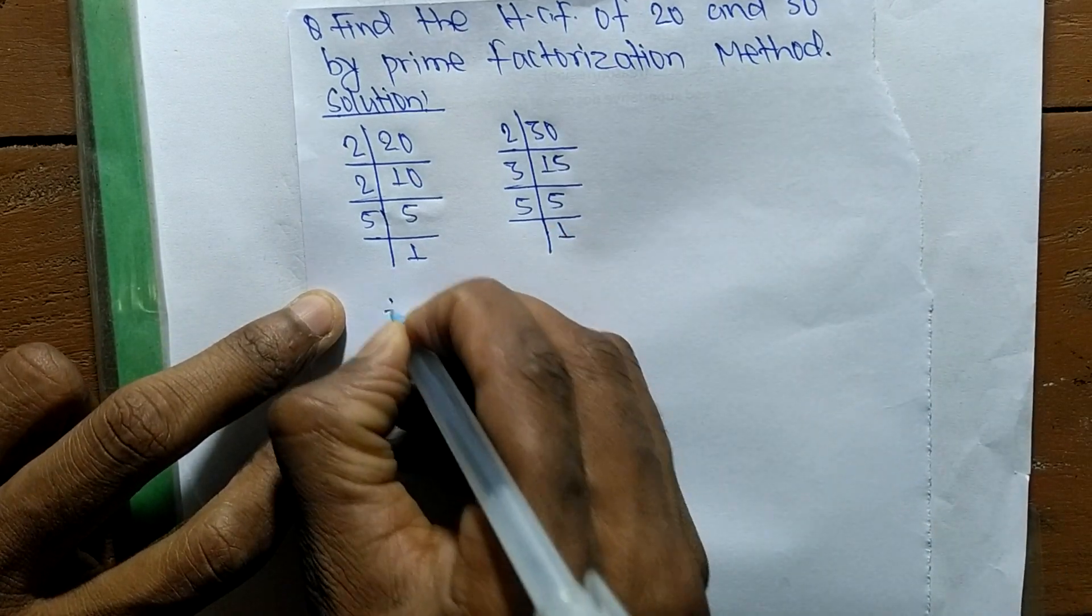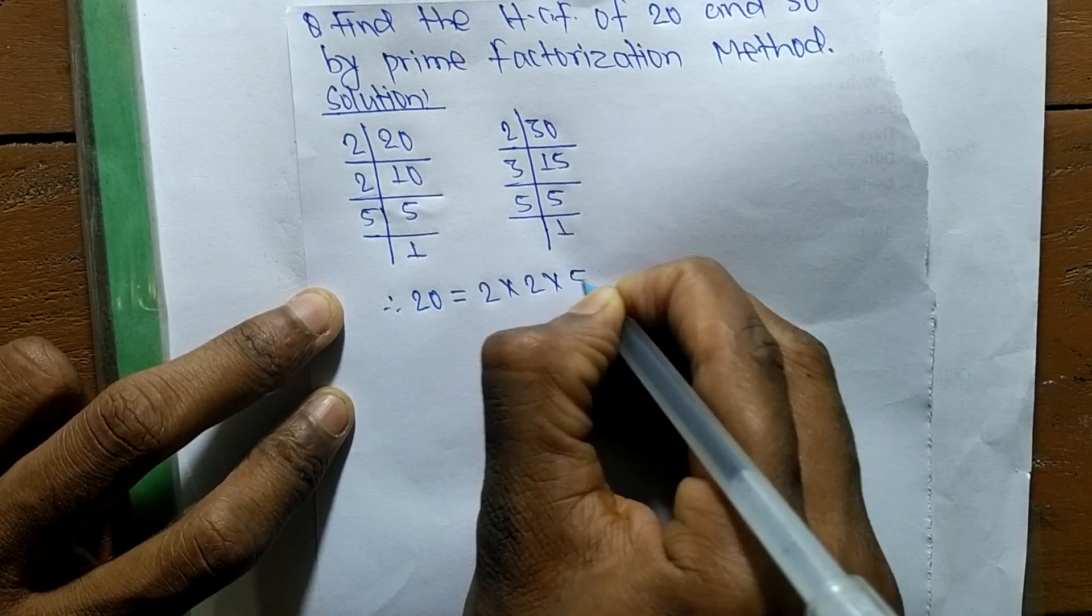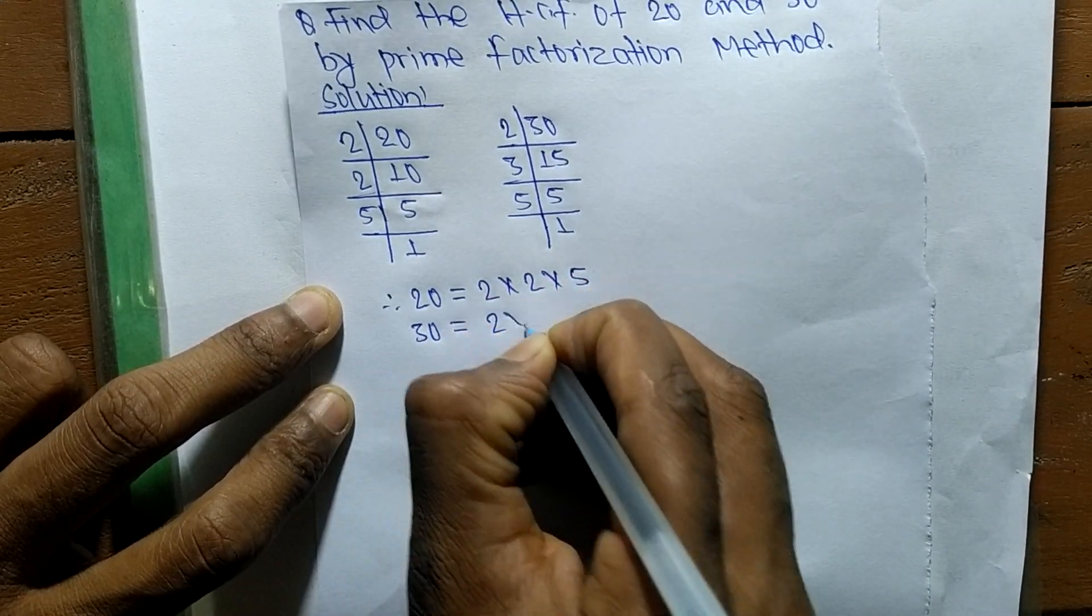20 is equal to 2 times 2 times 5. Like this, 30 is equal to 2 times 3 times 5.